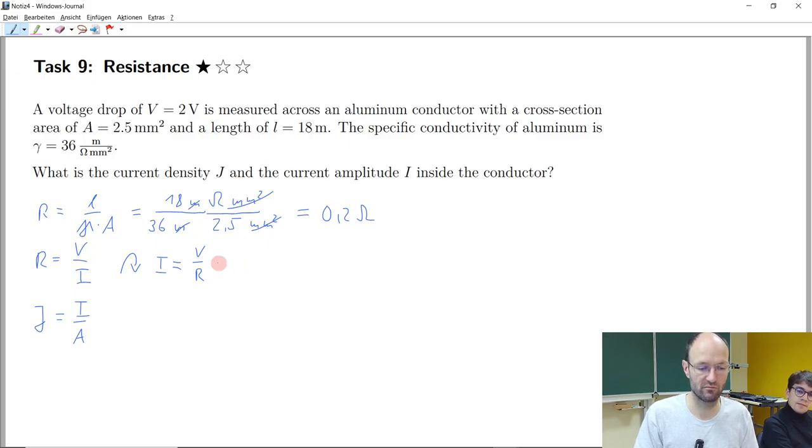So then if we insert the values into this equation, we have 2 volts divided by 0.2 ohm. Ohm is the same as volt divided by ampere. Volts will cancel each other. We will end up with ampere. And 2 divided by 0.2 ohm will be 10. So we get 10 ampere.